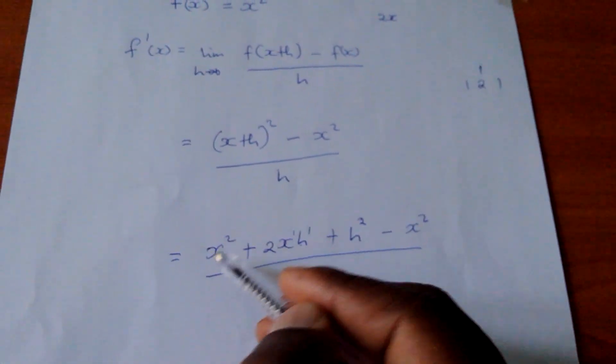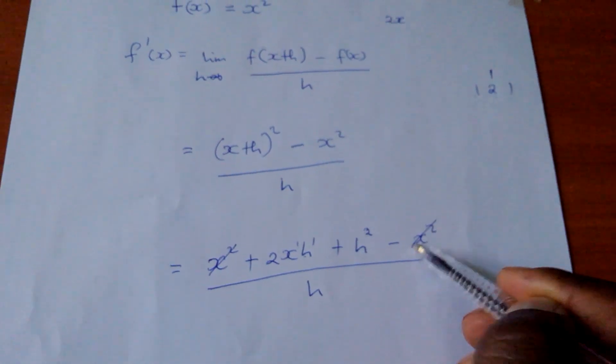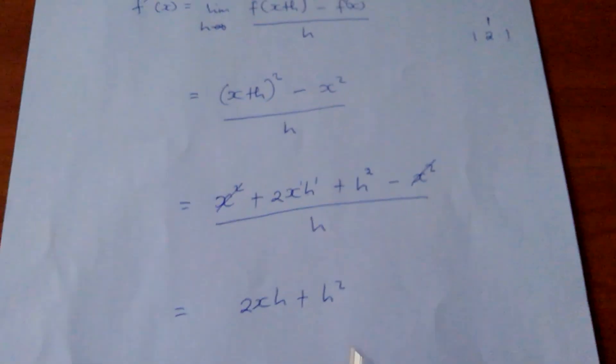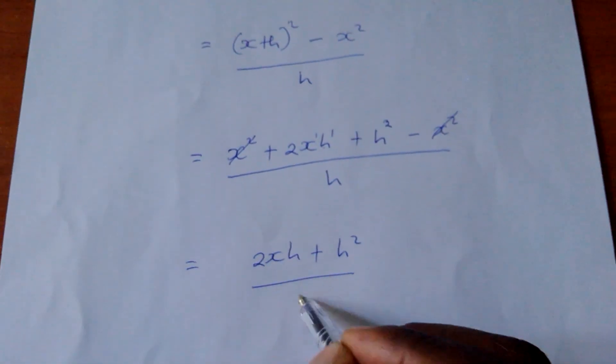But if I look at this, this x squared will cancel this x squared one. And eventually I will be left with 2xh plus h squared all over h.